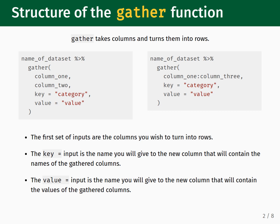After specifying the column names, there are two other inputs you need to write. The first is the key input, which is the name you will give the new column that will contain the names of the gathered columns. The second is the value input, which is the name you will give to the new column that will contain the values of the gathered columns.